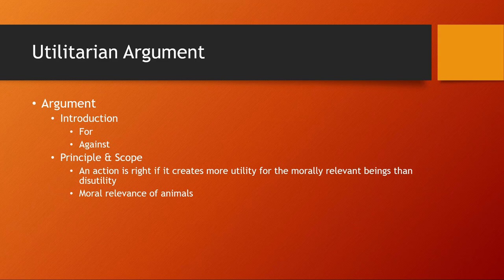Of course, utilitarians could also have cases where some humans count less than others. So if a human was less capable of suffering than another human, then the one more capable of suffering should perhaps get the place on the lifeboat, whereas the human who would suffer less should go in the water with the dogs. But anyway, utilitarianism is complicated.